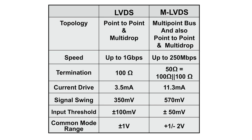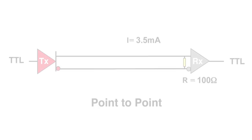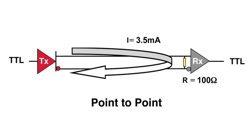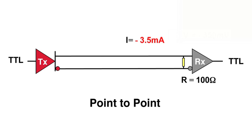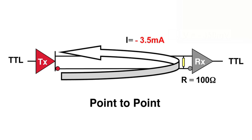Both of these interface standards use differential signalling levels. LVDS uses a current mode driver. The driver moves current either clockwise or counter-clockwise. Here the flow is clockwise. A current of 350mA flows over a termination resistor of 100 ohms. The receiver measures a voltage of 350mV across the resistor. This corresponds to a logic high. A counter-clockwise current corresponds to a logic low.